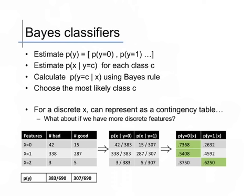We saw that for a simple discrete x, we could represent this as a contingency table. So we could compute the probabilities of each outcome y given x, and then choose the maximum class, the class that maximized that probability, as our prediction.